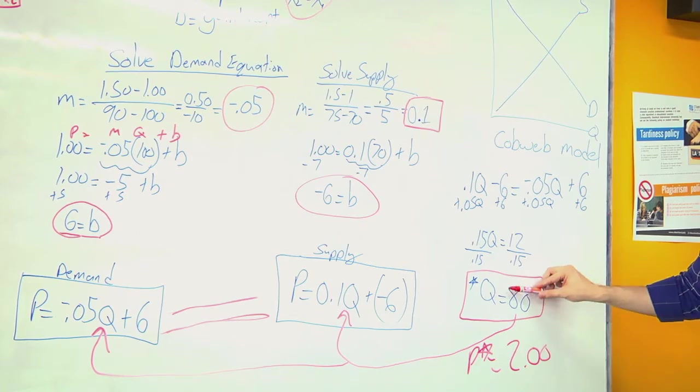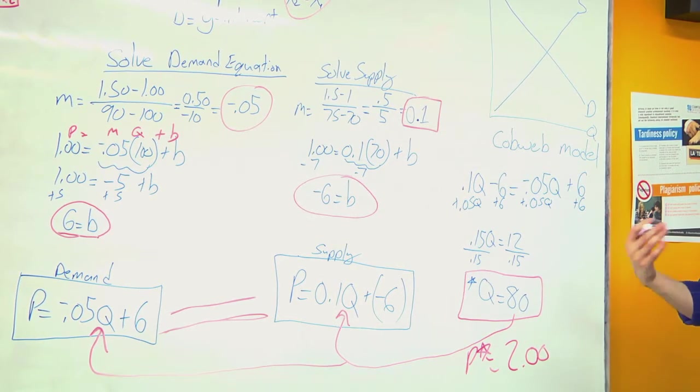So now I've solved for equilibrium quantity and price from the raw data.